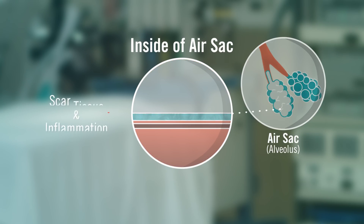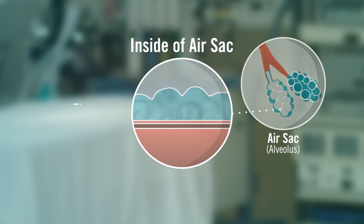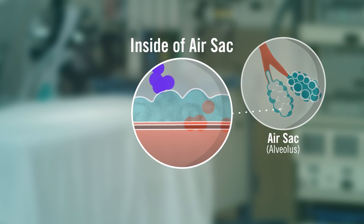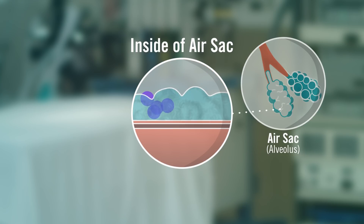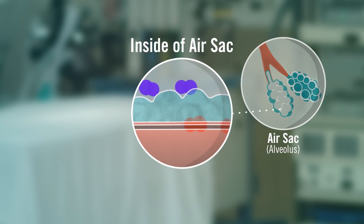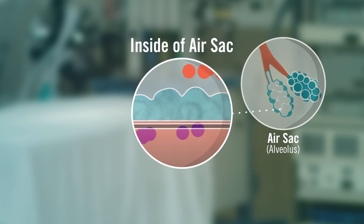When scar tissue or inflammation builds up in the walls of the air sacs, the wall gets thicker, making it more difficult for oxygen to get into the bloodstream. Thickened walls are also stiff, making it harder to breathe, which causes breathlessness. Scar tissue and inflammation can also trigger cough.